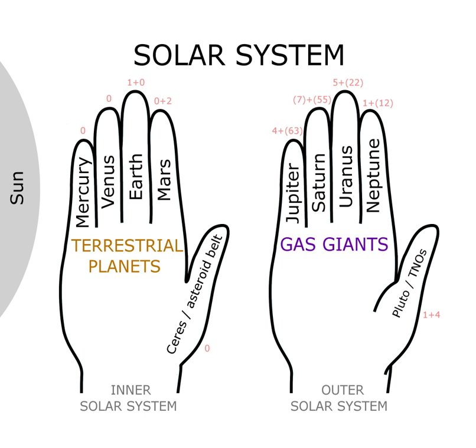However, at some point enthusiasm for new mnemonics will wane as the number of dwarf planets exceeds the number that people will want to learn. It is estimated that there may be 200 dwarf planets.